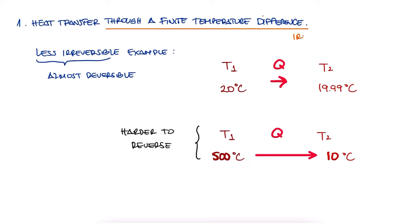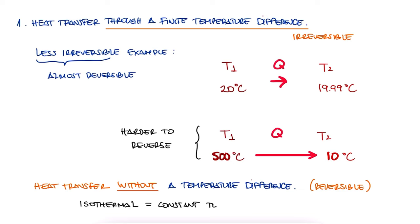Now if we want to make heat transfer reversible, we can just transfer heat without changing the temperature. We already know about these processes and we even have a word for them. We call them isothermal. This means that isothermal heat transfer is indeed reversible.